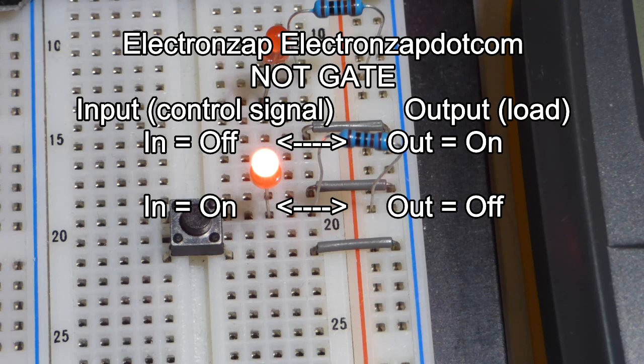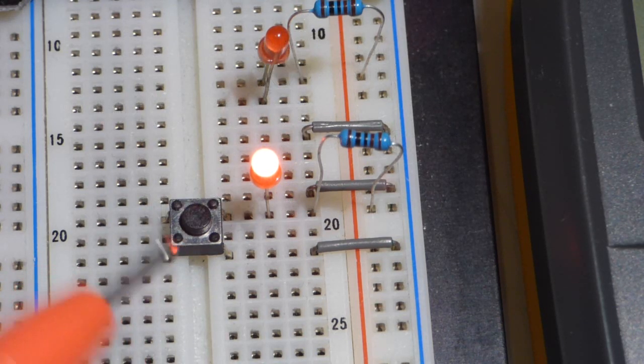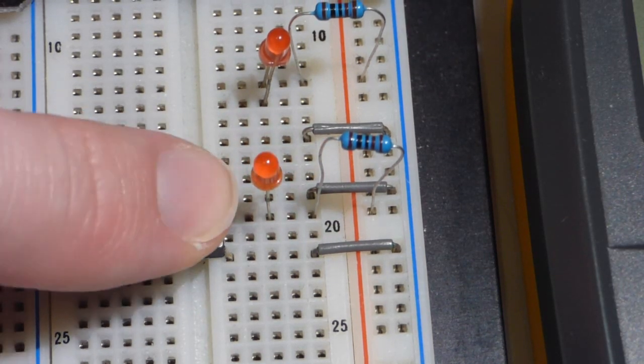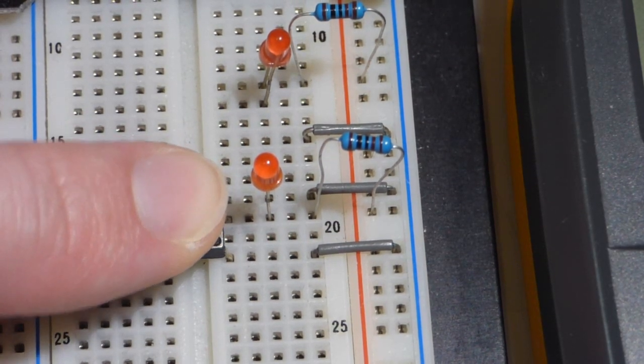So now we're going to turn the switch on. And so there's different ways to make the switch. This is a mechanical one, a simple one. So now you can see that the LED is off.